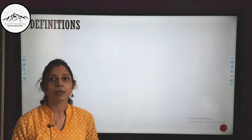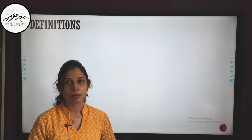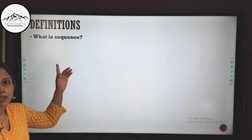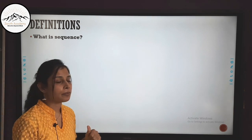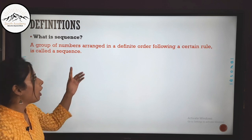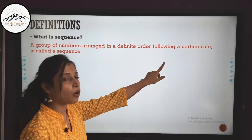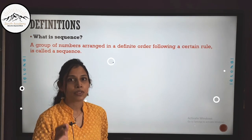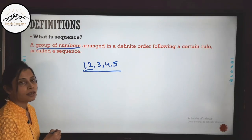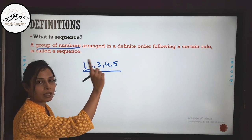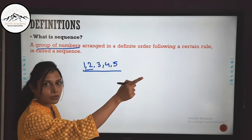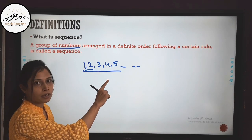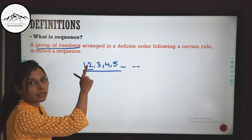In order to first understand what Arithmetic Progression is, we need to look at some definitions. The first term we need to understand is: what is a sequence? A sequence is a group of numbers arranged in a definite order following a certain rule. For example, 1, 2, 3, 4, 5 is a sequence because each succeeding number is an addition of the previous number by 1.